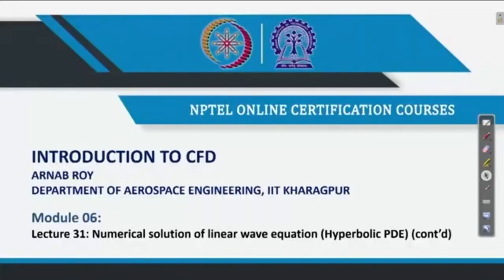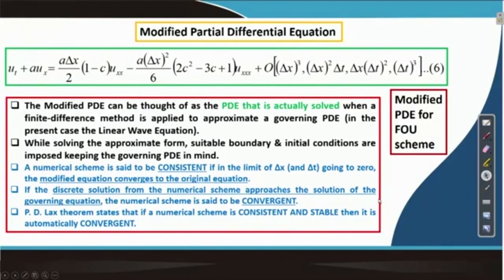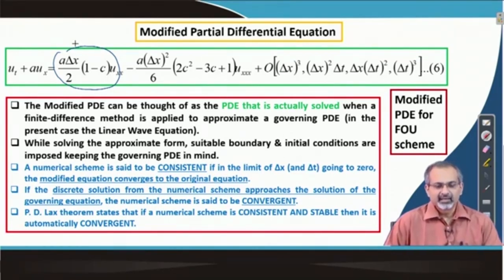We continue our discussion on linear wave equation in this lecture. In the previous lecture, we had discussed about the modified partial differential equation, and we are revisiting that equation here in the starting slide. We remember that we did it for the first order upwind scheme for discretizing the linear wave equation, and we could identify that there are error terms in the truncation error. The leading error term happens to be a second order derivative in space associated with a coefficient. The modified partial differential equation is effectively the PDE which we end up solving when we approximate the governing PDE using a numerical scheme.